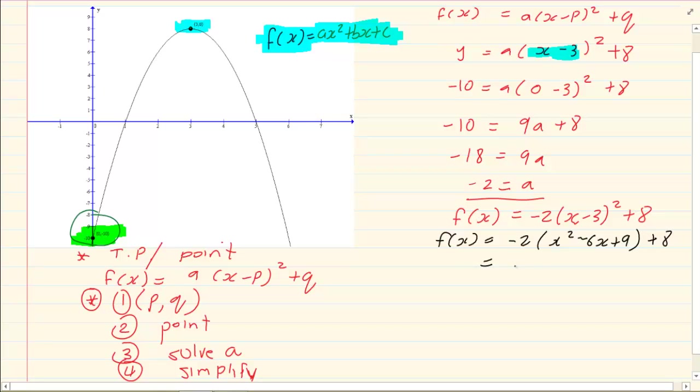Plus 8. Then we're doing our distributive law which is -2x² + 12x - 18 + 8. Our final equation is f(x) = -2x² + 12x - 10.